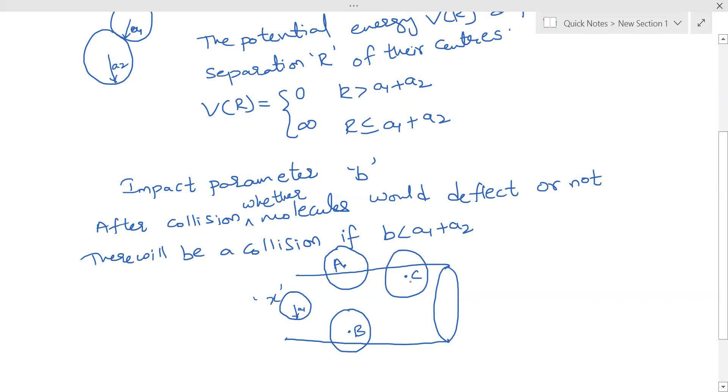Whereas the center of molecules C and B, they are inside the tube. So the collision will happen with B and C, whereas with A it doesn't happen. So molecule X collides with B and C but not A.